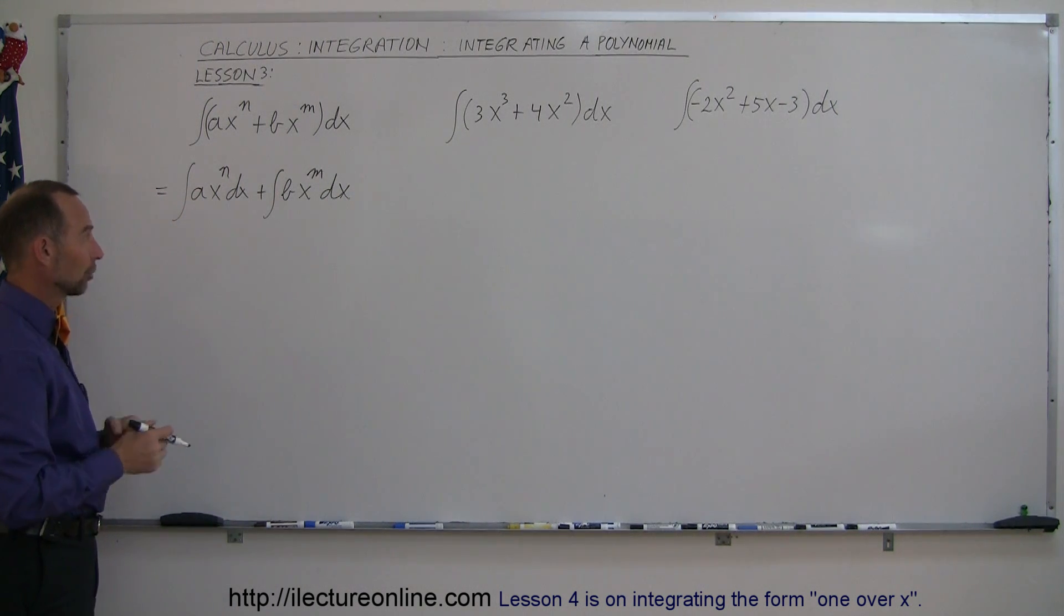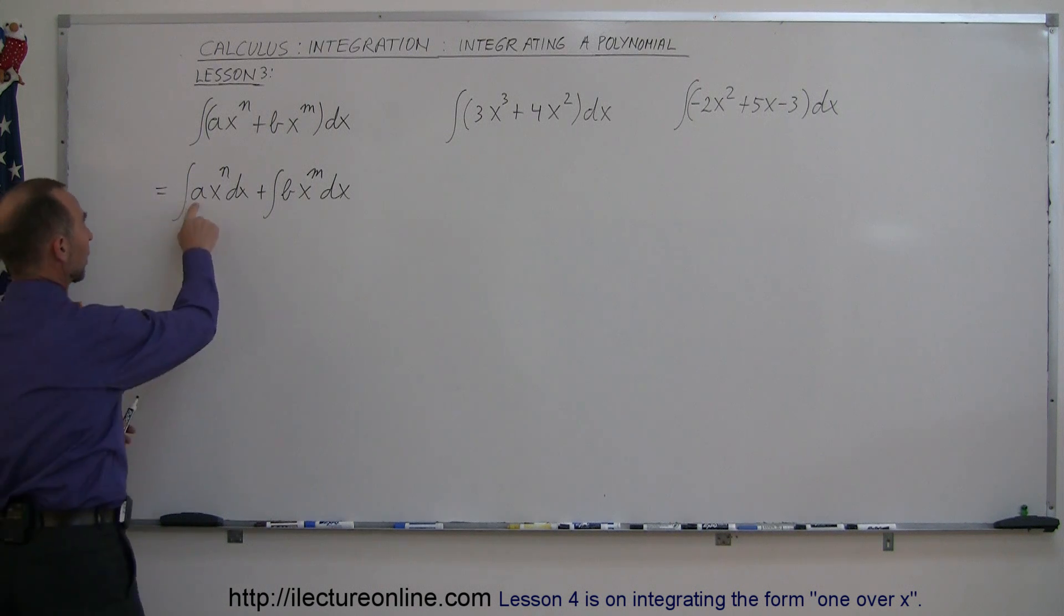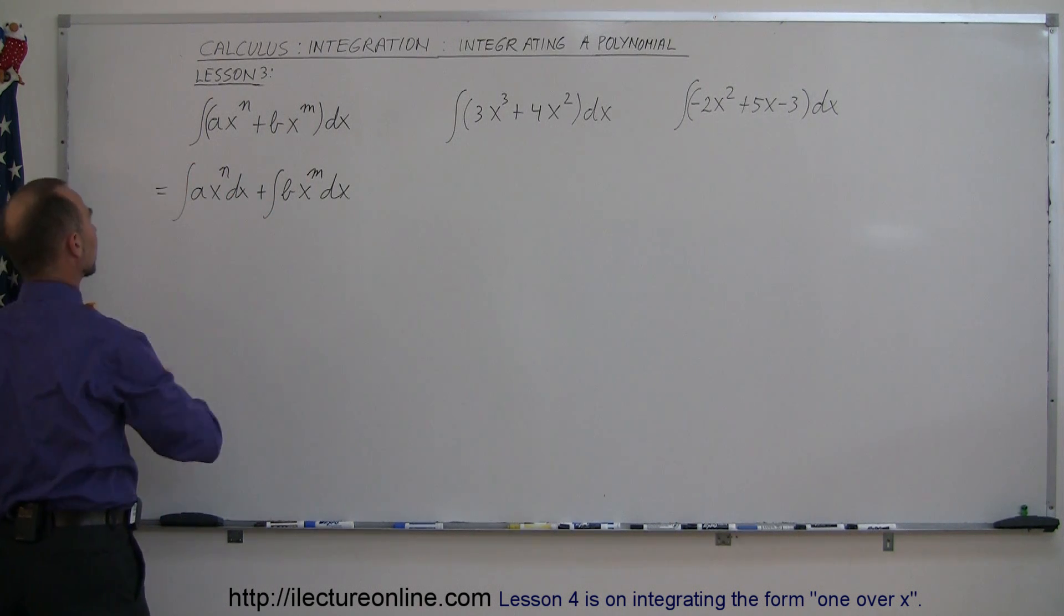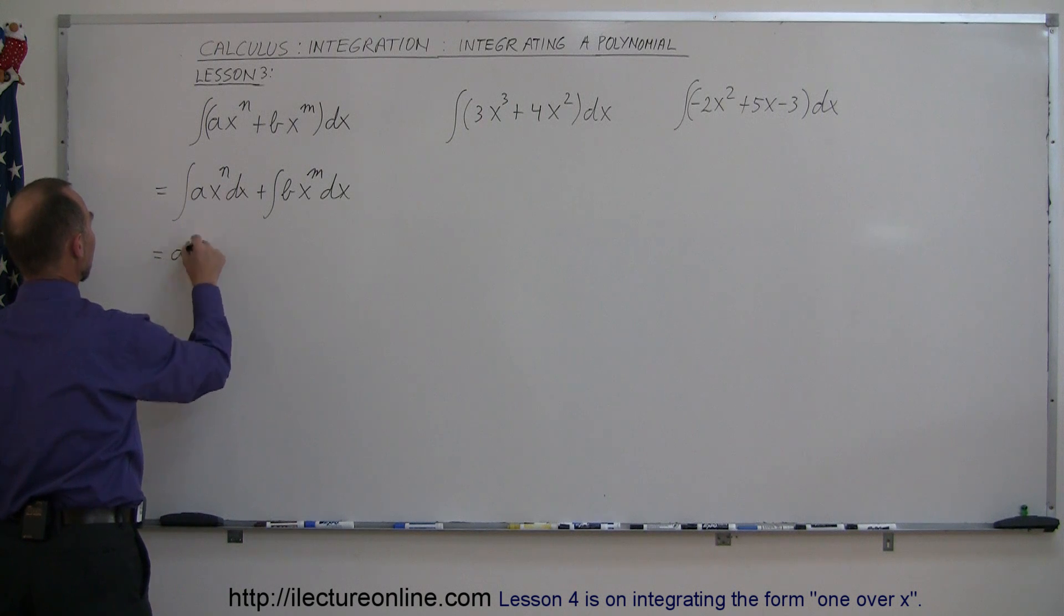Applying the rule that we learned before, we can take the constants, assuming a and b are constants, and move them outside the integral sign. So this is equal to a times the integral of x to the n dx,